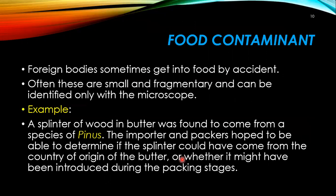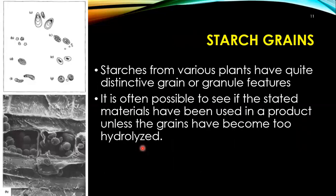Food contaminants: foreign bodies sometimes get into food by accident. Often these are very small and fragmentary and can only be identified with a microscope. For example, a splinter of wood found in butter was identified as coming from a species of Pinus. The importer and packers hoped to determine if the splinter came from the country of origin of the butter or was introduced during packing. Starch grains are also very important for determining the plant origin of food; it is often possible to detect if the stated materials have been used in the product unless the grains have become too hydrolyzed.